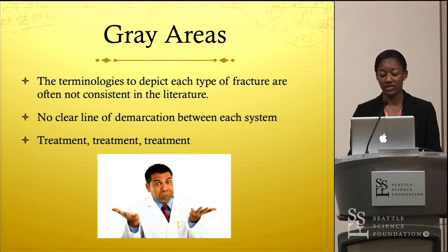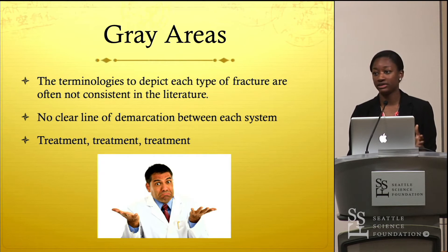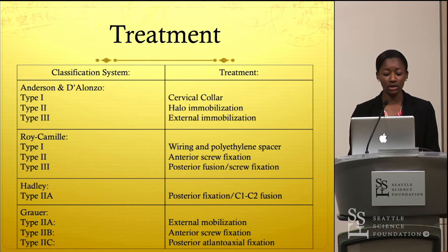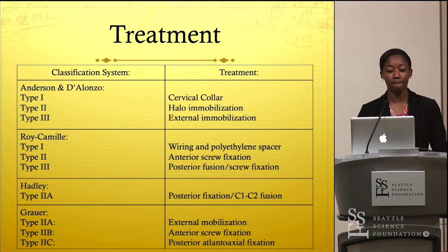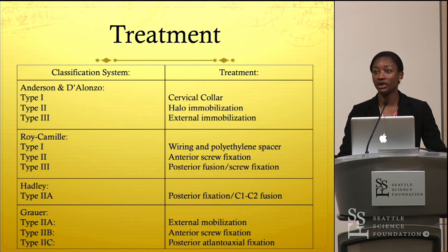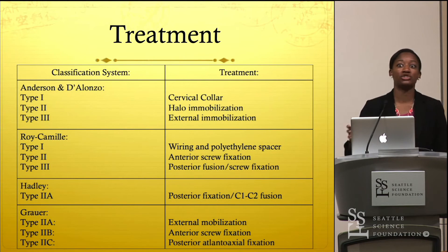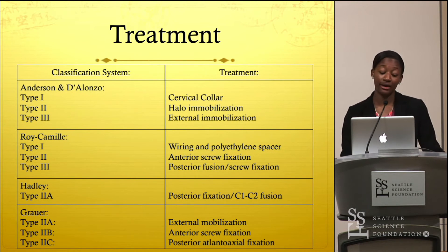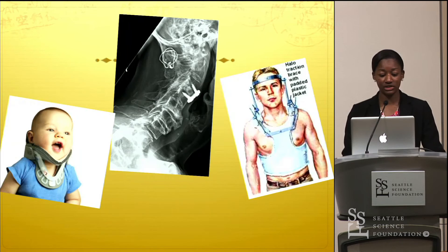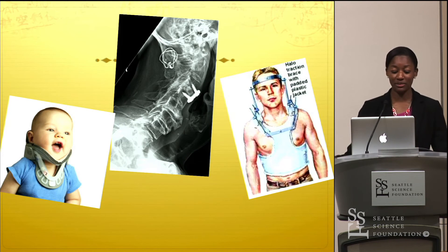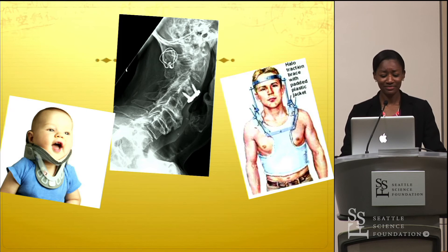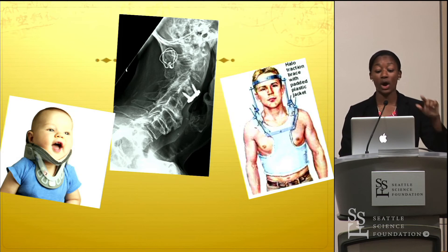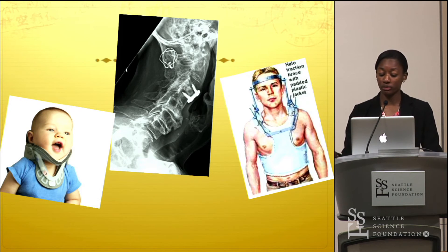Regarding treatment — the most important thing is these systems should be created to allow for more effective treatment. Depending on which system we're under, the treatment options are different, and there is a lot of debate in the literature about the best way to treat these fractures. Treatment options include cervical collar, screw fixation with posterior wiring, and halo immobilization.